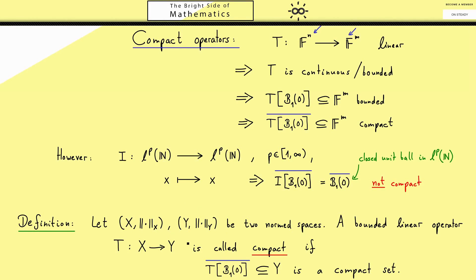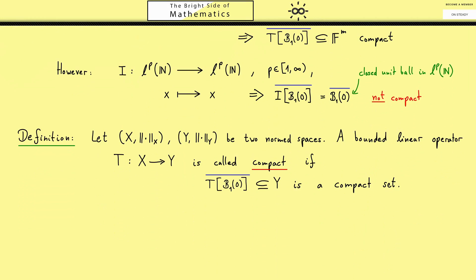Therefore, in the case that Y is a finite dimensional normed space, this is nothing special. However in the infinite dimensional case it really is. Hence I would suggest that we now look at a common example.